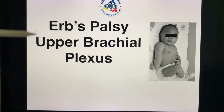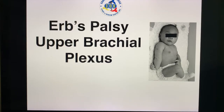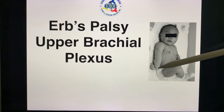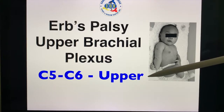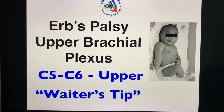ERB's palsy is an upper brachial plexus palsy which affects cervical five and cervical six. As you can see in this picture, this is the classic ERB's palsy, also known as the waiter's tip — upper brachial plexus, C5 to C6.